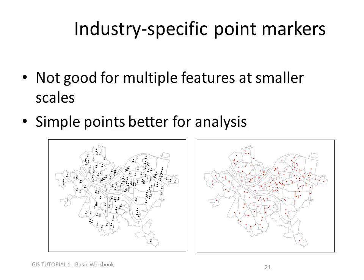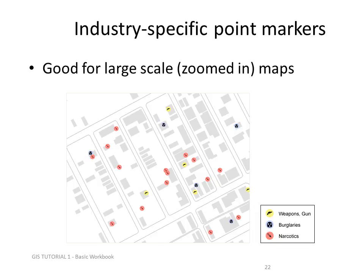We can also use industry-specific point markers. This works well when you have a map at a scale where you can make out the marker itself — for example, these are point markers for schools. Another use of industry-specific point markers: in this case, crime is the industry. We have weapons, burglaries, and narcotics, with recognizable symbols that communicate those particular categories.